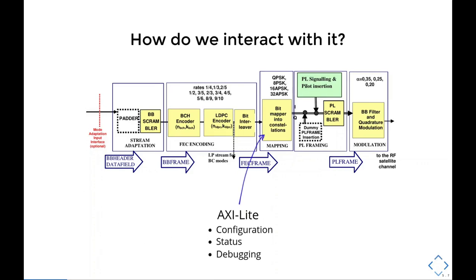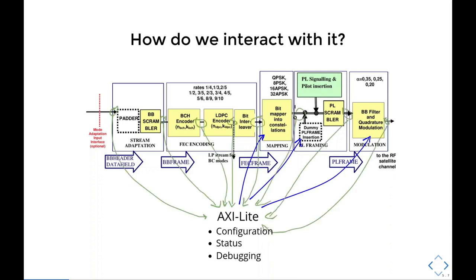We can configure the bit mapper tables, enable and disable dummy frame insertion, and configure the filter coefficients. Status and debugging are for things like monitoring behavior, controlling the flow of data, and both apply to several internal interfaces. We can check how many frames in flight we currently have, or what's the biggest, smallest frame that has passed through a certain stage.